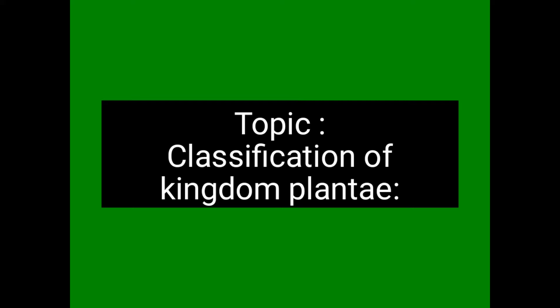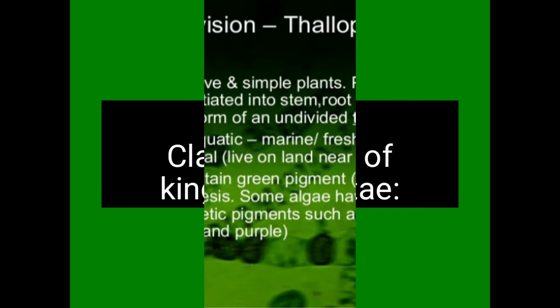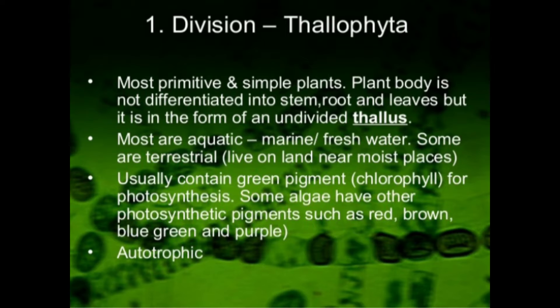Today we want to discuss Thallophyta. Thallophyta includes plants with primitive and simple body structure. The body structure is not differentiated into stem, root, and leaves — they lack a well-differentiated body structure. It is in the form of an undivided thallus, meaning the plant body is thallus-like.